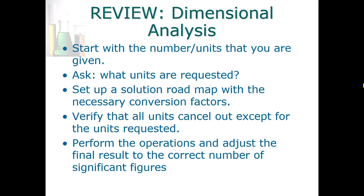Let's review our strategy for dimensional analysis. Start with the number and units that you are given — write that on the left. Then ask what units are being requested and put that on the right side of your sequence where you can build your roadmap. Set up a solution roadmap with the necessary conversion factors, and verify that all units cancel out except for the units requested — any unit you want to eliminate should be on opposite sides of the fraction bars. Then perform the operations and adjust the final result to the correct number of significant figures.